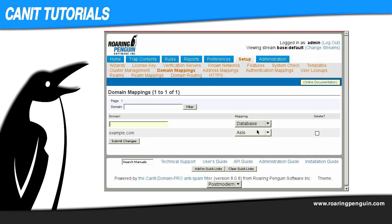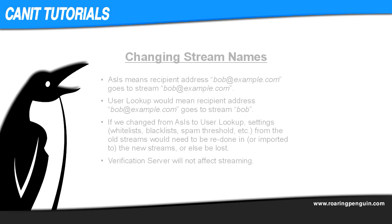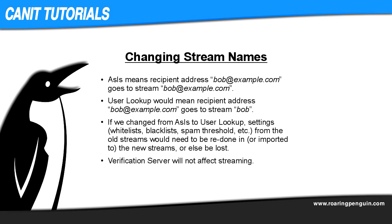The as-is method means that the stream name for each recipient address will be the same as the address. For example, an email to bob@example.com will go through a stream called bob@example.com. Note that if we were to create a user lookup for this domain instead, the stream names would probably change. Most user lookups assign a user ID or account name as the stream, so bob@example.com would be looked up in LDAP or Active Directory and the owner's user ID or account name — say it's "bob" — would become the stream name.